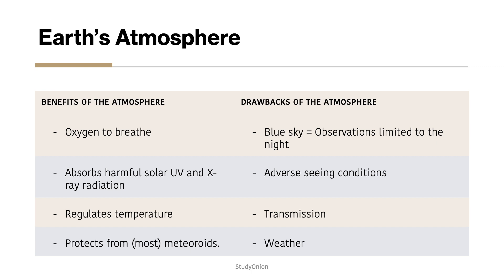However, there are a few disadvantages of the atmosphere for astronomers. Firstly, scattering — the sky is blue, which limits observations to night time. Light from the sun is scattered by nitrogen and oxygen particles in the atmosphere, and because most of this scattering occurs at shorter wavelengths of blue and violet light, the sky is predominantly blue.